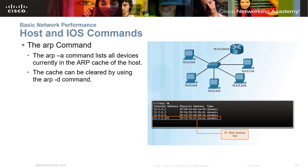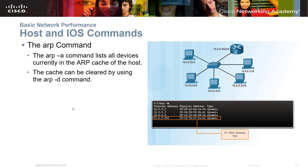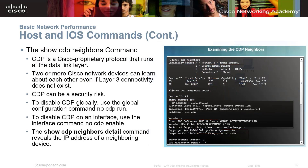The ARP command — arp -a — lists all devices currently in the ARP cache, so you can check what's in the ARP table. The cache can be cleared using the arp -d command. If you're having trouble with the ARP table, you can clear that cache out, though you usually don't deal with that too much. It is something you need to know for this course.